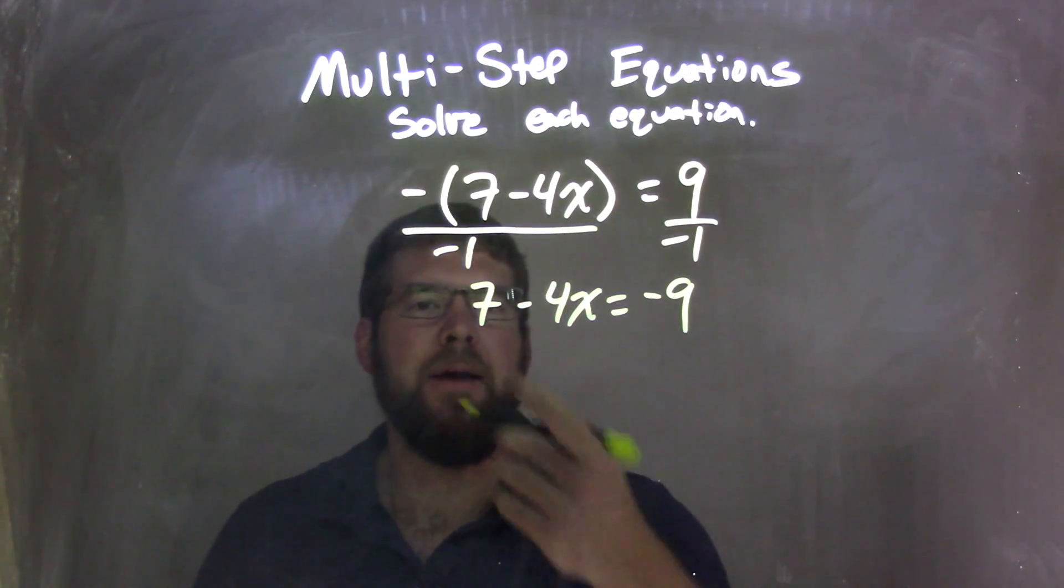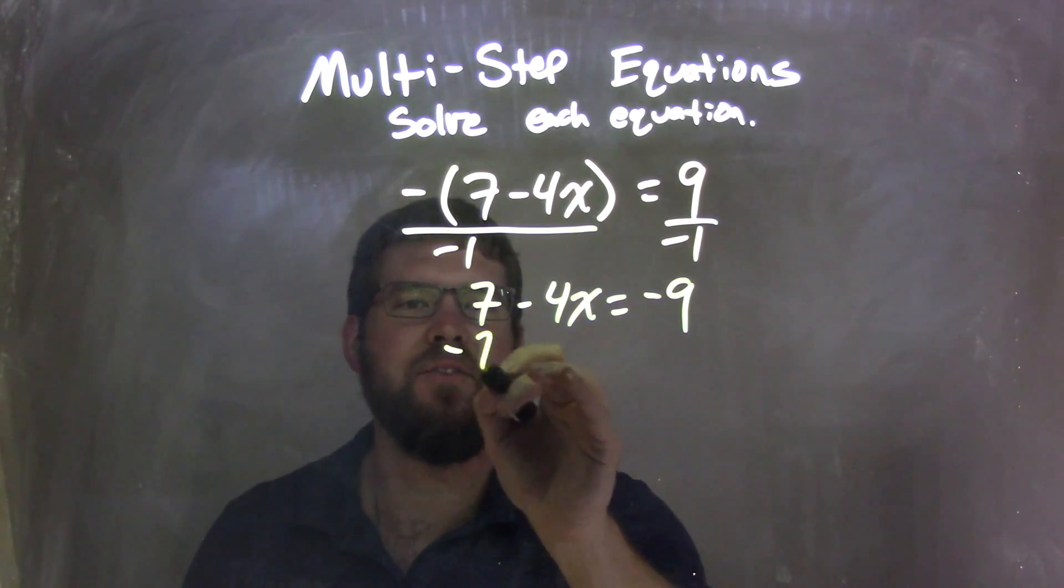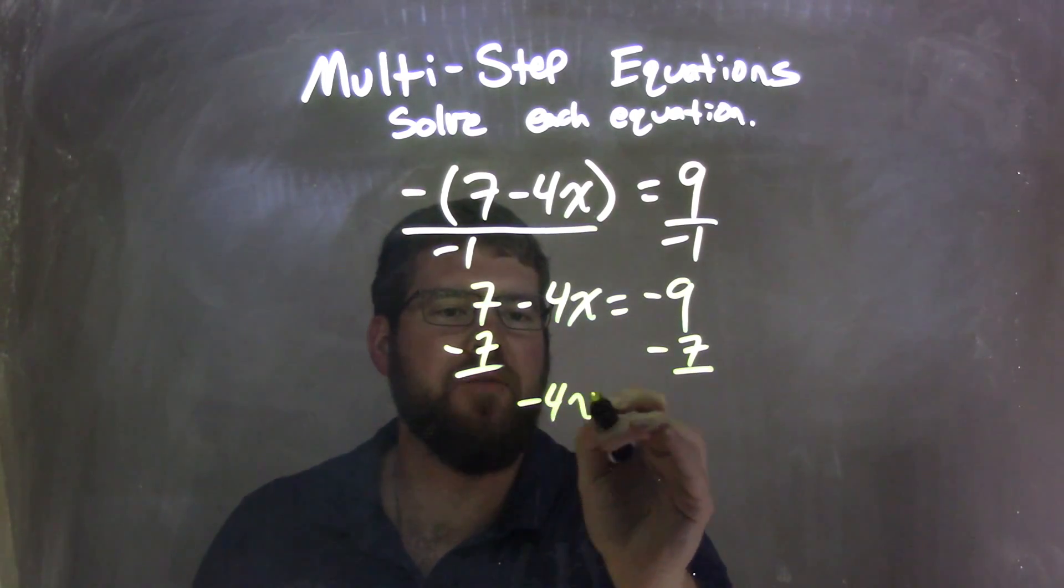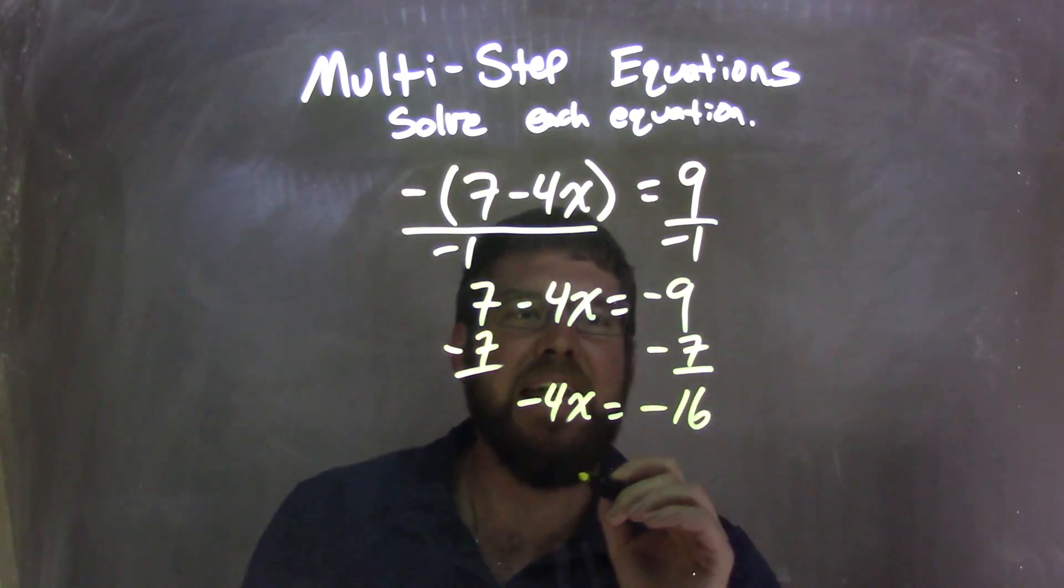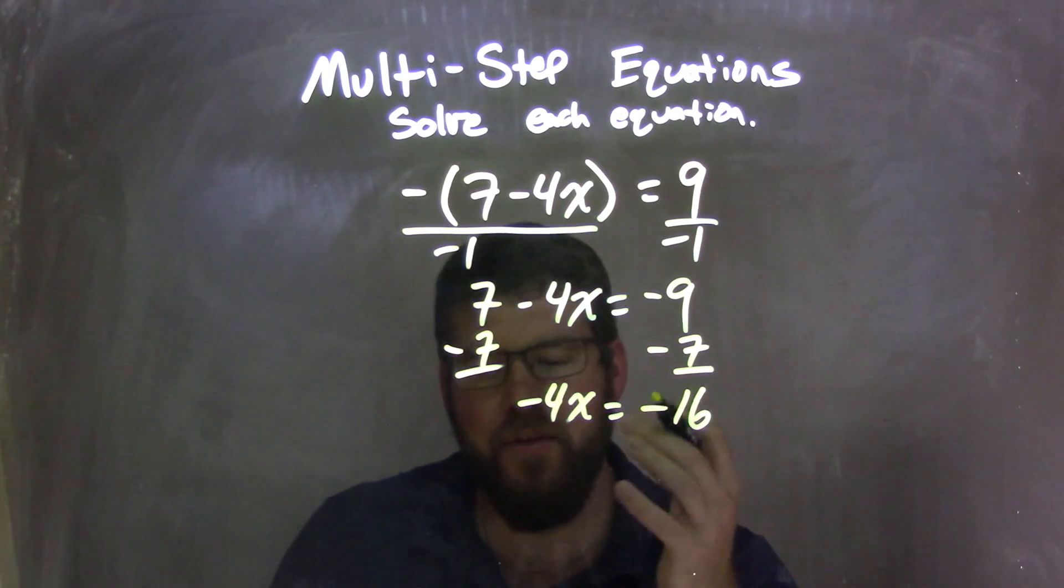Now, I want to bring the 7 over to the right, so I subtract 7 from both sides. I have negative 4x on the left, which equals negative 9 minus 7, which is negative 16.